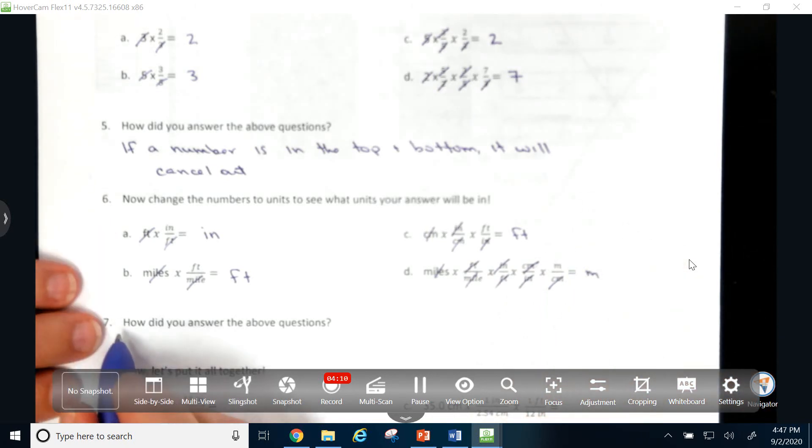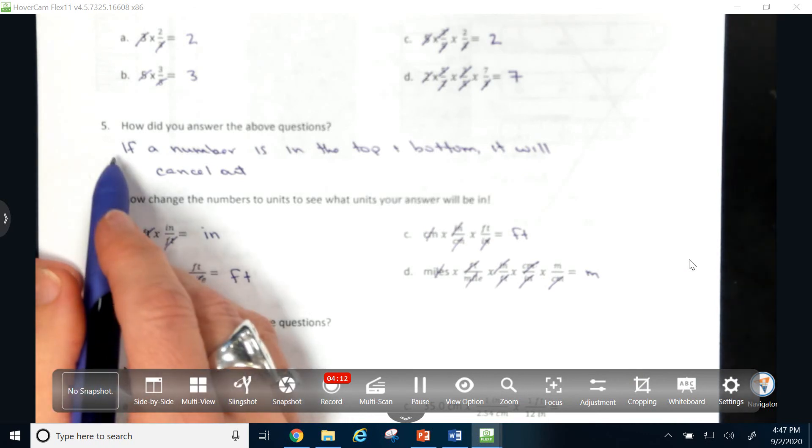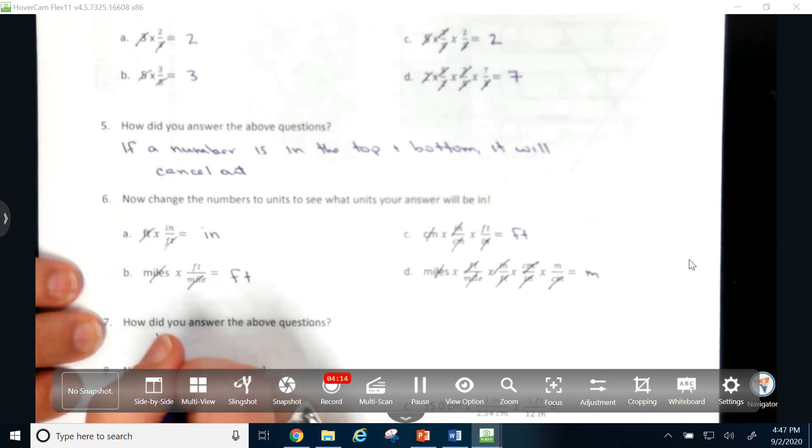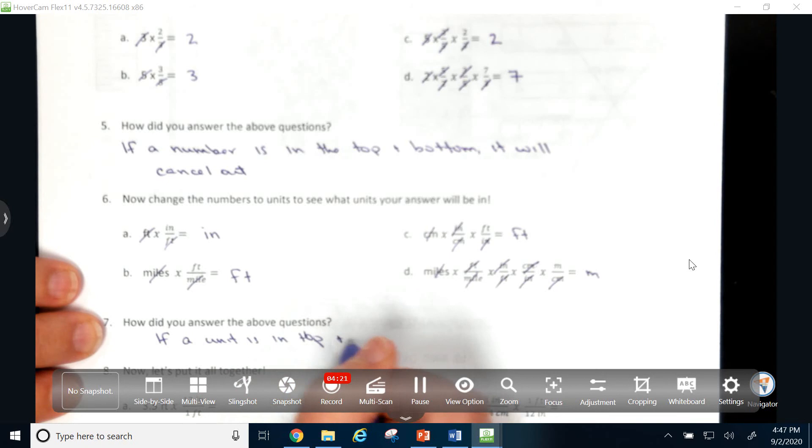So my answer to number 7 would be the same as my answer to number 5, but with units. So if a unit is in the top and the bottom, it will cancel out.